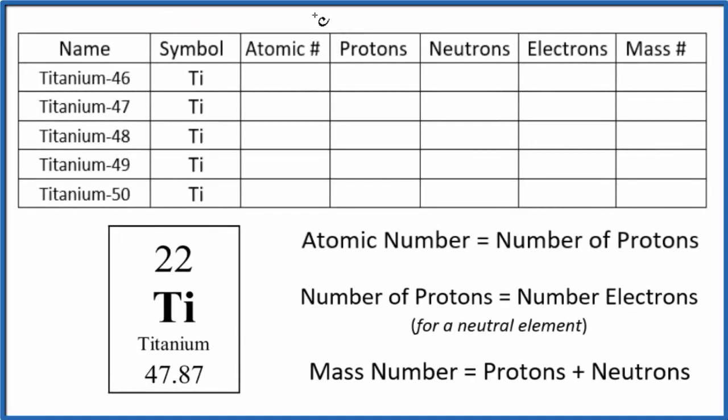In this video, we'll find the atomic number, protons, neutrons, electrons, and the mass number for titanium, Ti. So the first thing that we can look at here is that titanium on the periodic table, this is the atomic number.